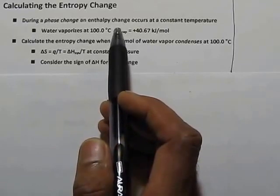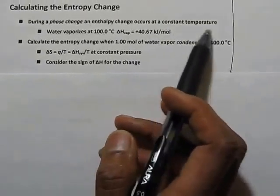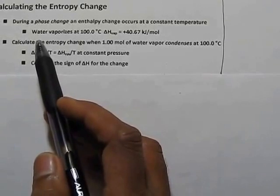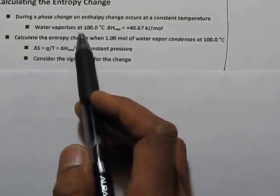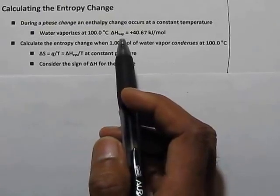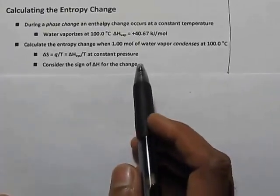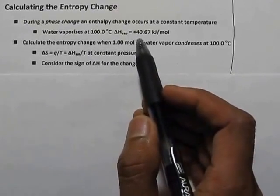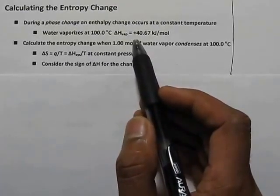This happens at a constant temperature. Here the information is given: water vaporizes at 100 degrees Celsius, means water boils and converts into vapors, and the change in energy is ΔH_vap = +40.67 kJ/mol.